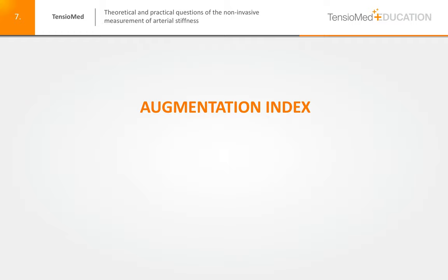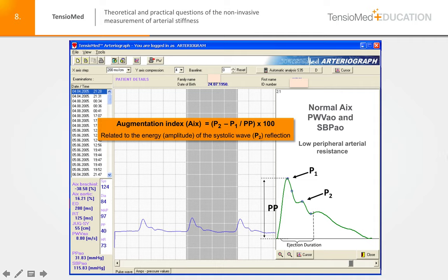The augmentation index formula is shown here. P2 is the second systolic wave — the reflected backward systolic wave. P1 is the first direct systolic wave, called the forward systolic wave. The amplitude of P2 minus the amplitude of P1, divided by the pulse pressure and multiplied by 100, gives the augmentation index. The lower the P2, the lower the augmentation index; the higher the P2, the higher the augmentation index. This index is primarily related to peripheral vascular resistance and the small arteries and arterioles.